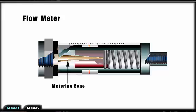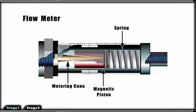The main components consist of a metering cone, a magnetic piston, which is held in the no-flow position by a tempered spring.